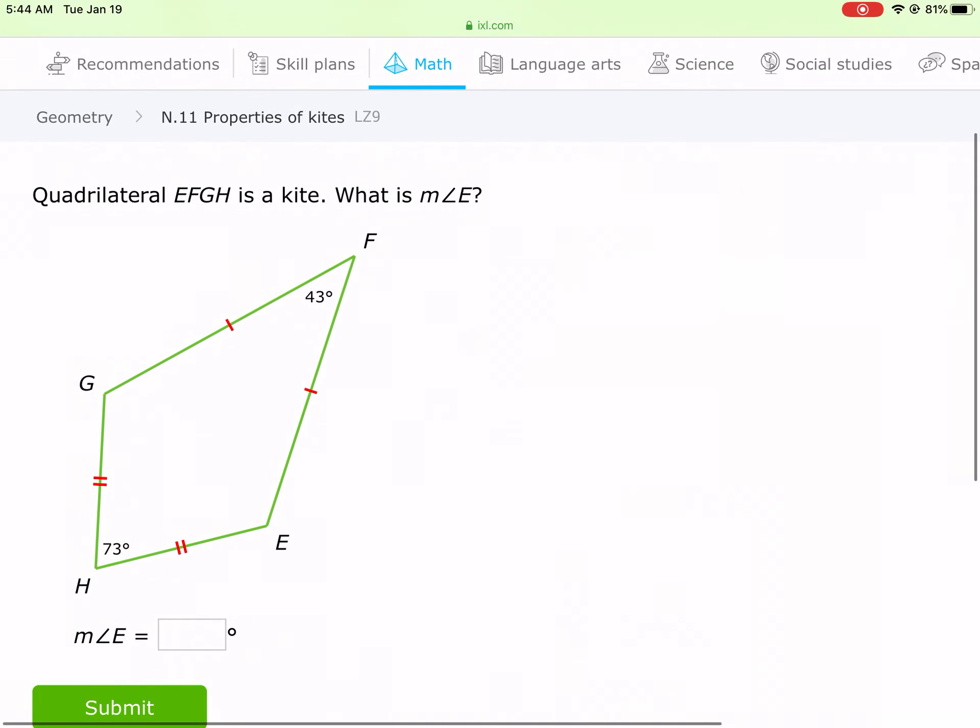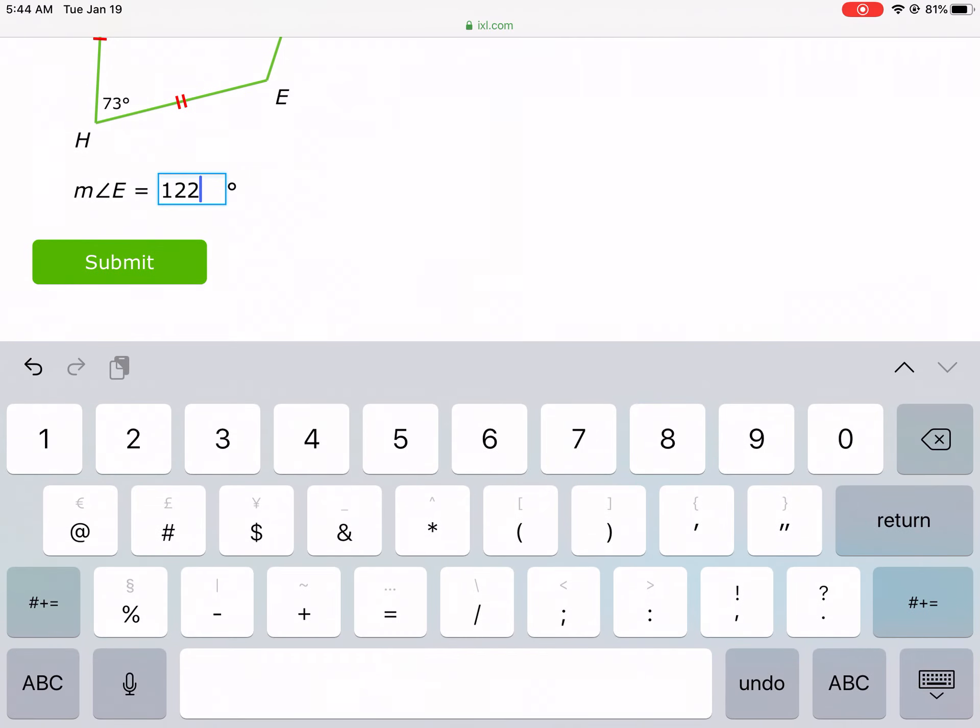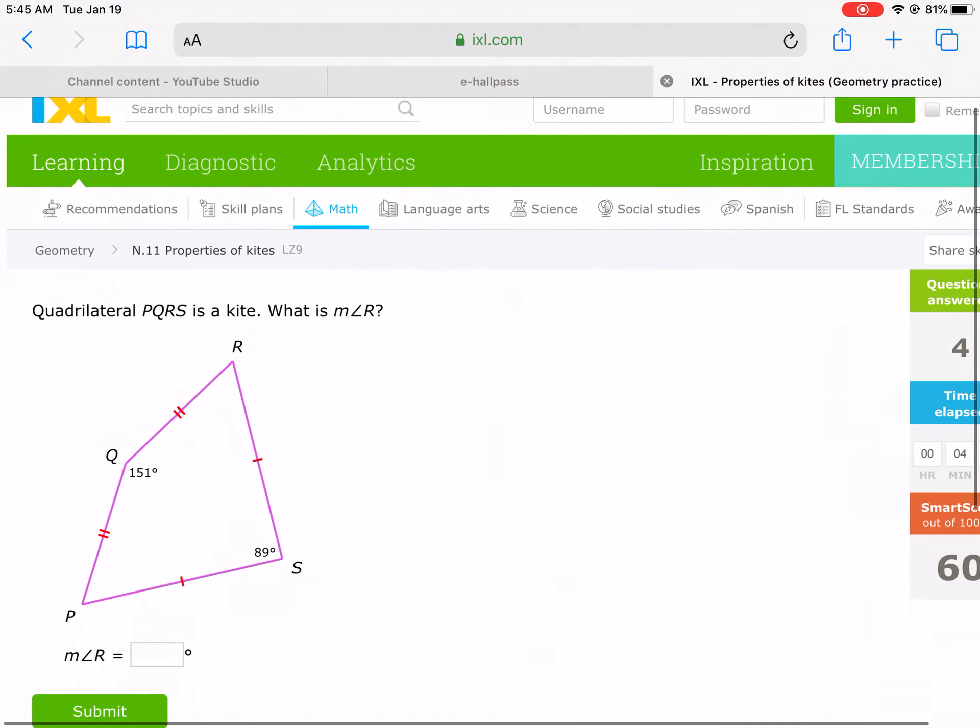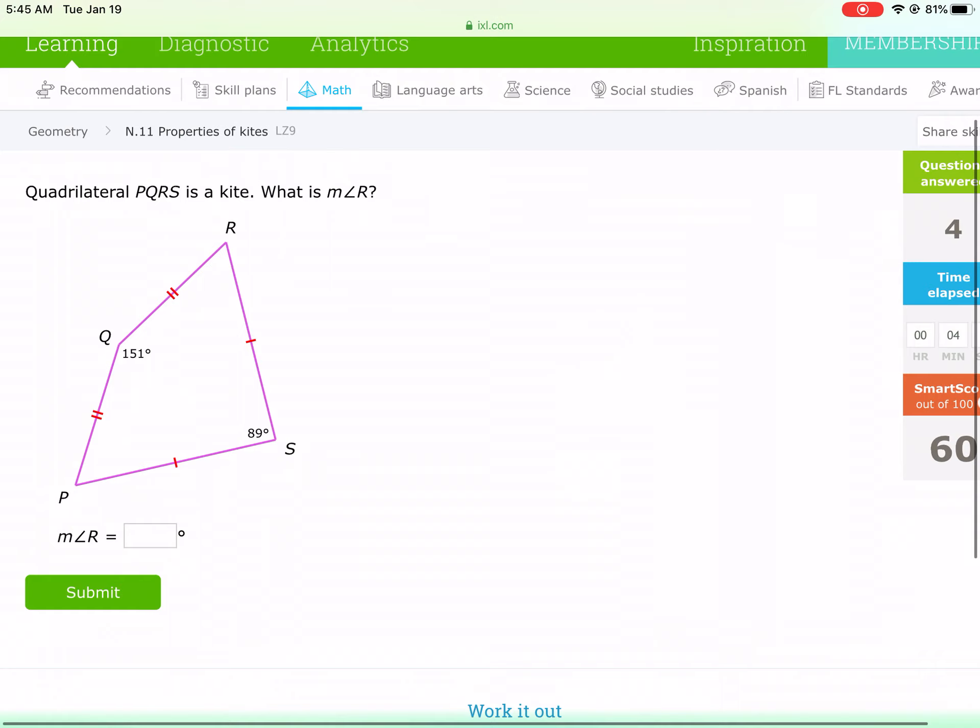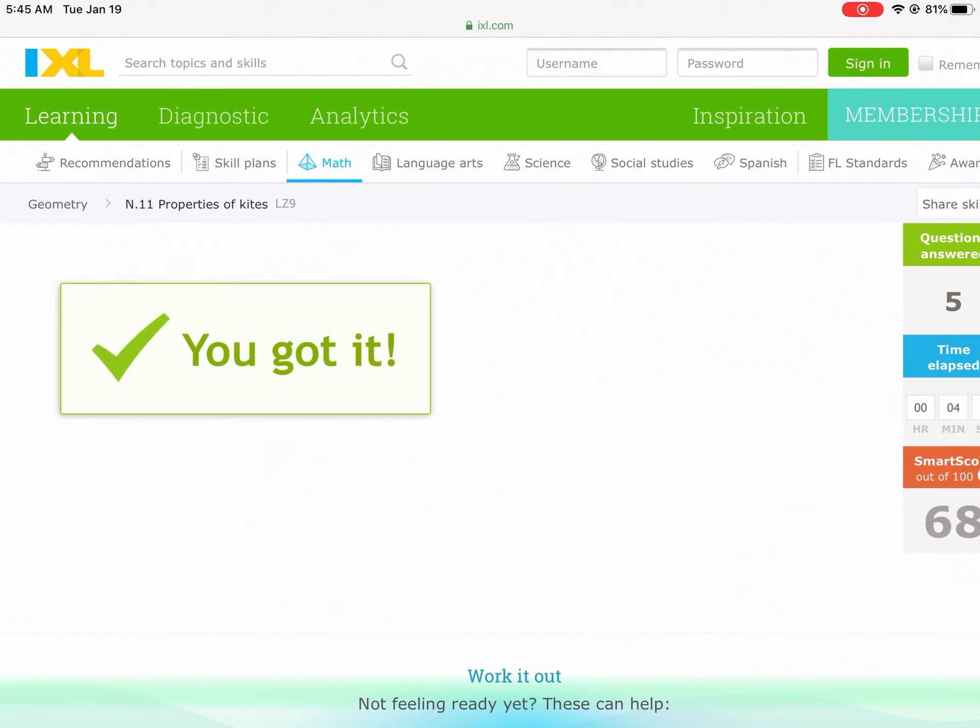Okay, quadrilateral EFGH is a kite. Wow, these problems are identical. They're very similar to each other, so we do 360 minus 43 minus 73, that's what I'm doing in my calculator, divide by two, and you get 122. Brilliant. Guess what we're doing with this? 151 plus 89 equals, subtract from 360, divided by two, 60.